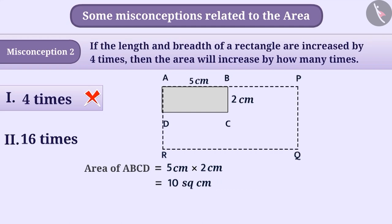If both the length and breadth of the rectangle are increased by 4 times, the new length will be 4 × 5 cm = 20 cm, and the new breadth will be 4 × 2 cm = 8 cm.